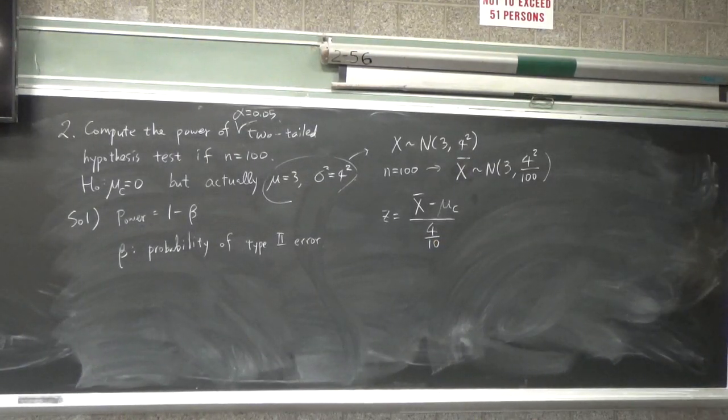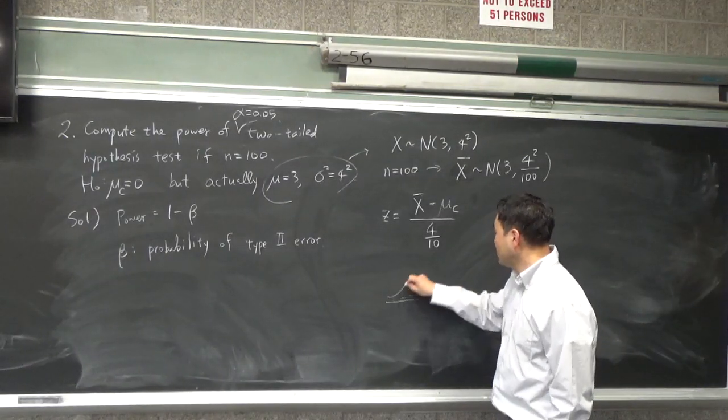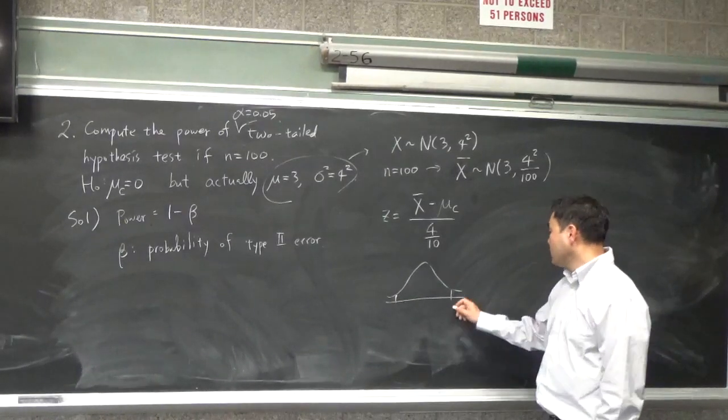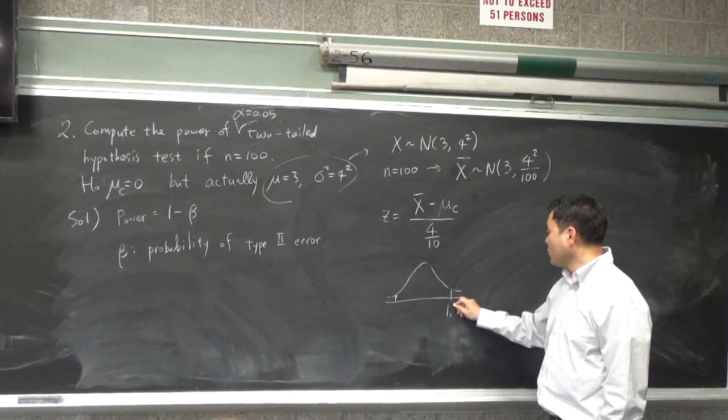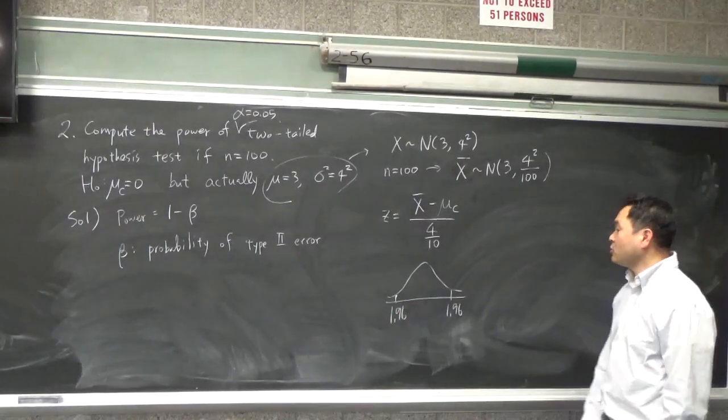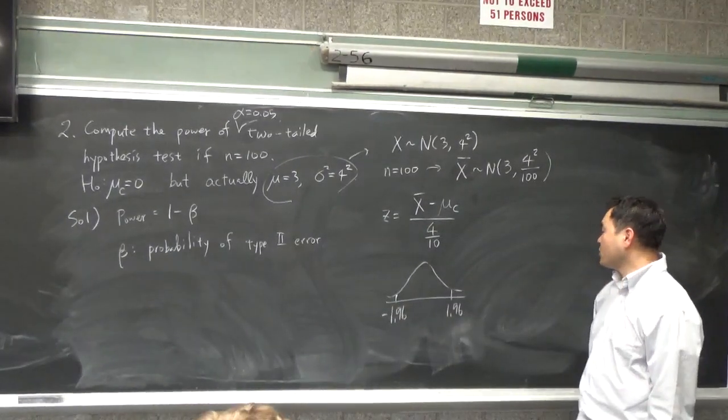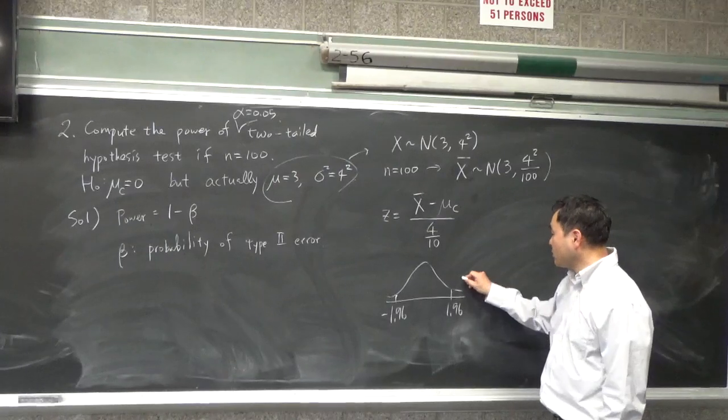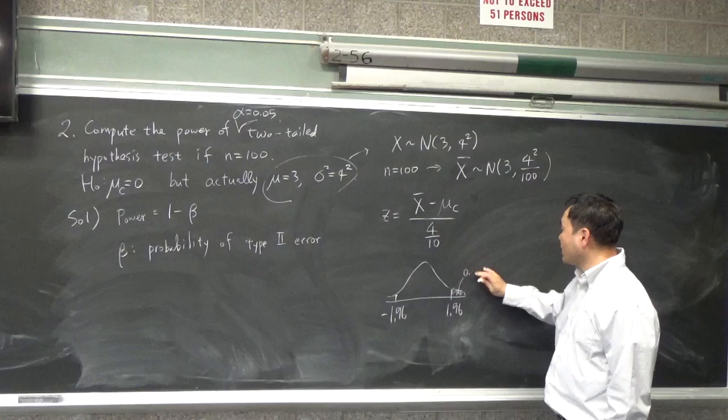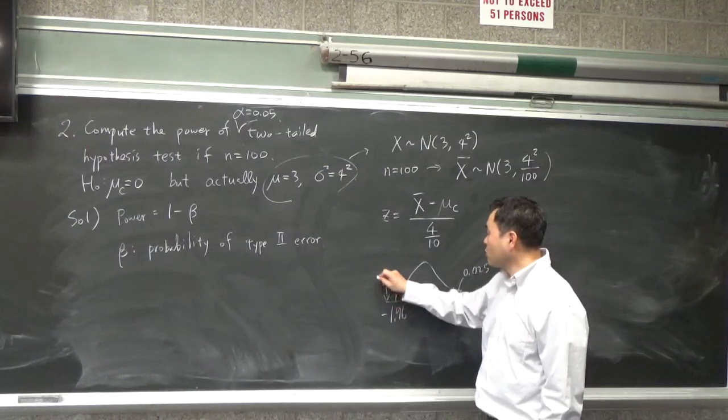And the critical value would be, this is a two-tailed test, so it's like 1.96 here, 1.96. For two-tailed, if you have negative 1.96 and positive 1.96, this region right here will be 0.025 or 2.5 percent. And this will also be 0.025.